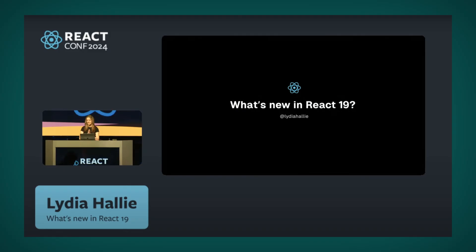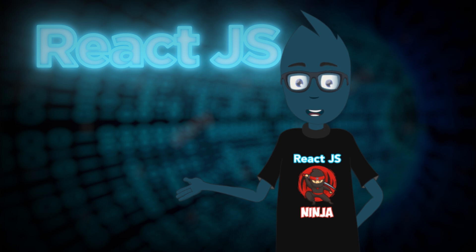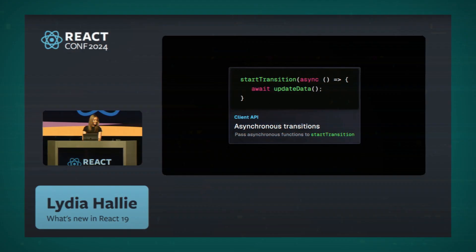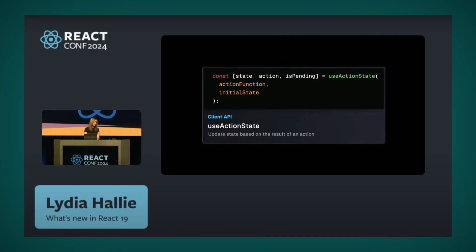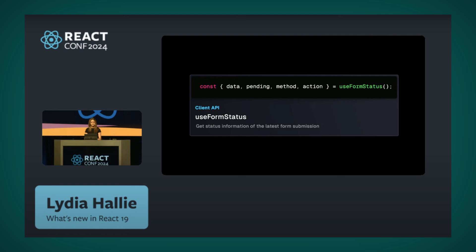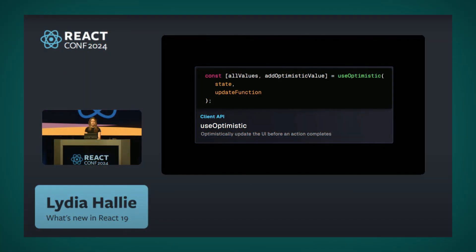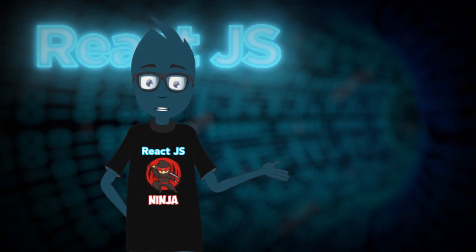After lunch, Lydia Hallie took the stage and briefly went over all the new features in React 19. They added the ability to pass an async function to startTransition. Then she smoothly transitioned to the useActionState hook — I've already covered it, nothing radically new. Next was useFormStatus — it provides access not only to the pending state, but also to all other form data. Fourth was useOptimistic — you can pass a second parameter, a function that suggests merging the new value with the previous one, which is convenient when storing an array and adding elements to it.